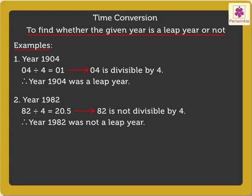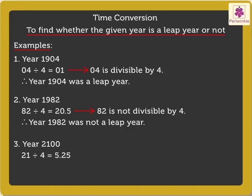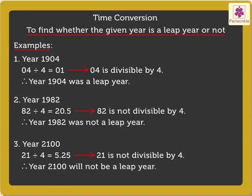Finally, we shall find out whether the year 2100 will be a leap year or not. As the year 2100 is a century year, we have to check if the number represented by the first two digits, 21, is divisible by 4. 21 is not divisible by 4. Therefore, the year 2100 will not be a leap year.